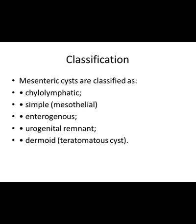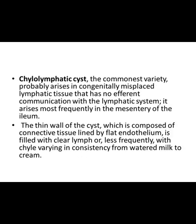Now let us see them one by one. The chylolymphatic cyst is the commonest variety, probably arising from congenitally misplaced lymphatic tissue that has no efferent communication with the lymphatic system. It arises most frequently in the mesentery of the ileum.